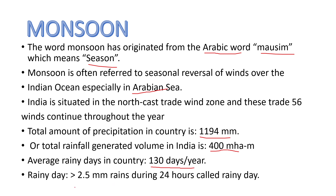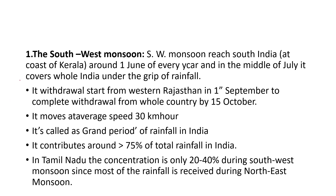A rainy day is defined as greater than 2.5 mm of rain during 24 hours. The first type of monsoon is the southwest monsoon. It reaches south India around 1st June of every year and by the middle of July it covers whole India under the grip of rainfall. Its withdrawal starts from western Rajasthan on 1st September and completes withdrawal from the whole country by 15th October. It moves at an average speed of 30 km per hour. It is called the grand period of rainfall in India and contributes greater than 75% of total rainfall in India.